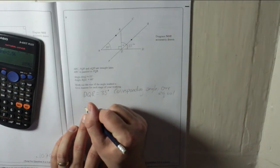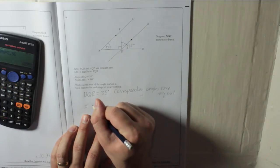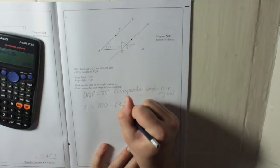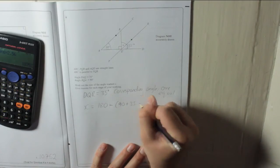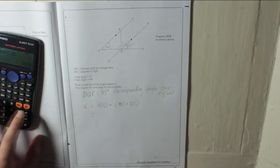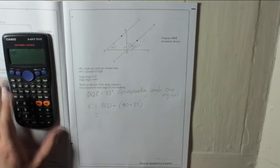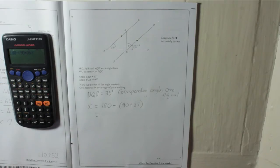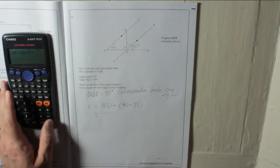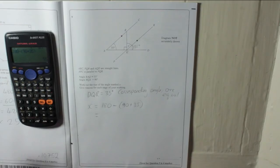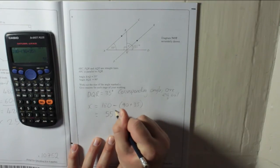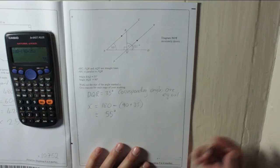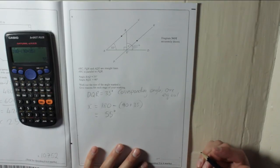So to work out X: X is 180 take away 90 and 35. So 180 minus (90 plus 35), which gives 55 degrees. You could have done 180 take away 90, press equals, and take away 35, press equals, and you'd get 55 degrees. Don't forget your reason — angles on a straight line, adjacent angles on a straight line, are equal to 180 degrees.